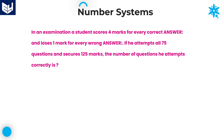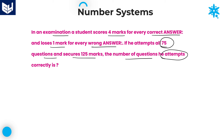Last question in this session. In an examination, a student scores 4 marks for every correct answer and loses 1 mark for every wrong answer. So for every correct answer, 4 marks gained, and for every wrong answer, 1 mark is lost. If he attempts all 75 questions and secures 125 marks, the question is: what is the number of questions he attempts correctly? Let us take the number of questions answered correctly as x.